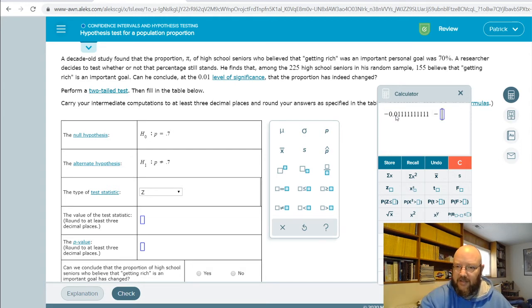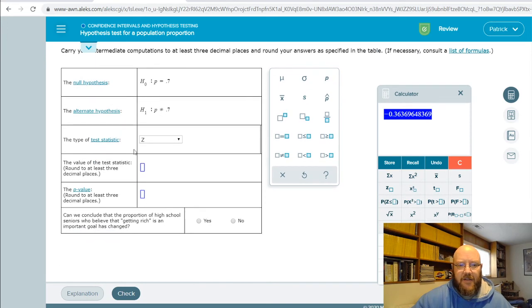We get that. We're going to take that, divide that whole thing, not subtract, divide that whole thing by the square root of pi, which is 0.7, times 1 minus pi, which is 0.3. You can just type that in there if you wanted to. So, all over N, which is our sample size, 225, here's our test statistic, is negative 0.367.